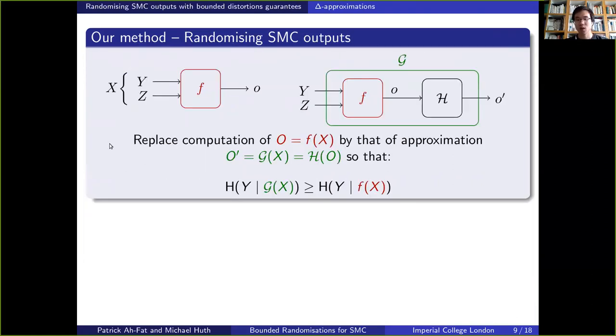Based on this privacy measure that we have just introduced, we can now reason about the mechanisms that are going to enhance the input's privacy. Our method is going to work as follows. We're going to take the function f to be computed illustrated on the left hand side and we're going to randomize its output with a randomization function called h. The resulting function called g and highlighted in green on the right hand side is going to be our approximation of f.